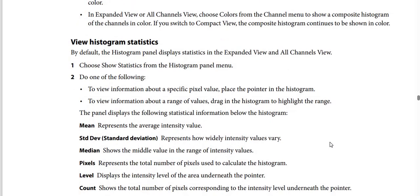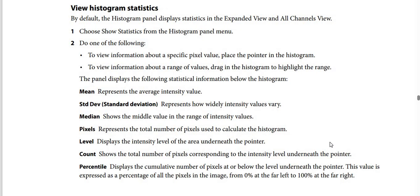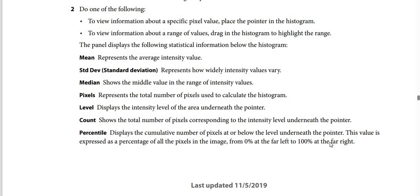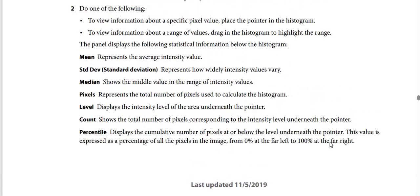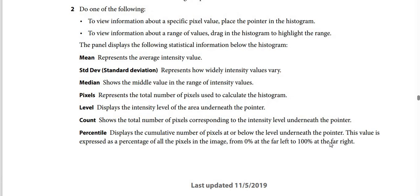By default, the Histogram Panel displays statistics in Expanded View and All Channels View. Choose Show Statistics from the Histogram Panel menu. To view information about a specific pixel value, drag in the histogram to highlight the range, and the panel displays statistics below the histogram. Mean represents the average intensity value. Std (Standard Deviation) represents how widely intensity values vary.